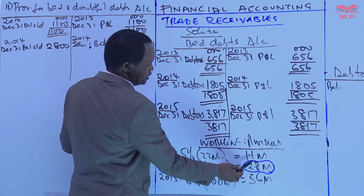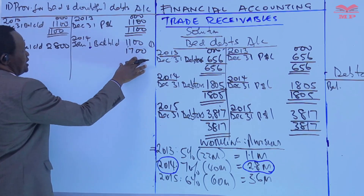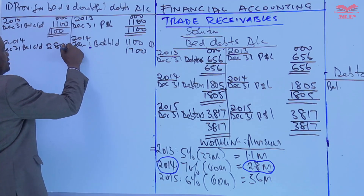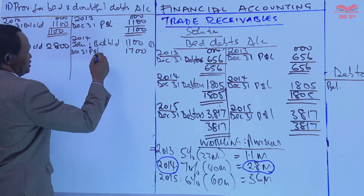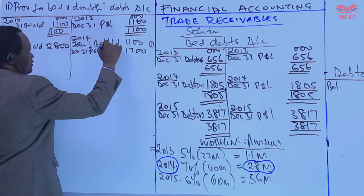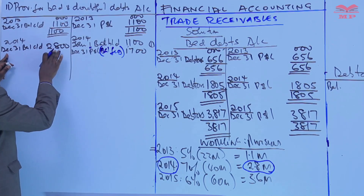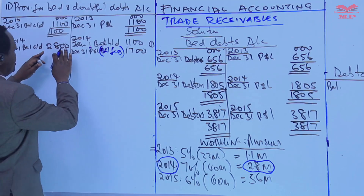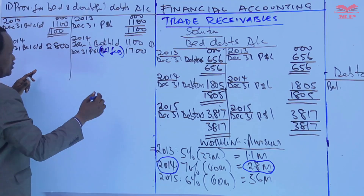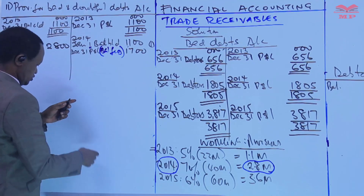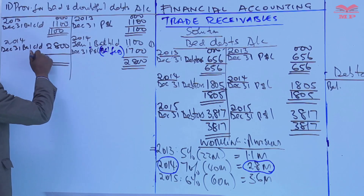When there is an increase, we debit the P&L account — the date here is December 31 — P&L is debited, and this is a balancing figure. You can calculate the balance at the end, then subtract to get the balancing figure. We close the account: 2.8 on both sides and close it.